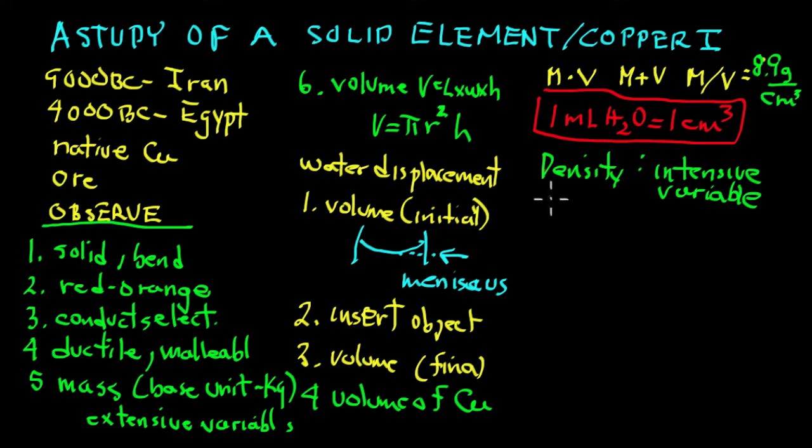Density also can be described from the metric system as taking a base unit mass, a base unit. And we're dividing it by what's called a derived variable.